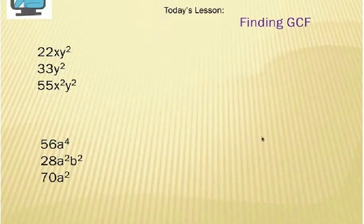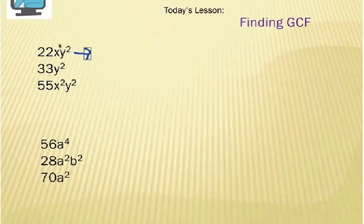All right, as you can see here, we have three algebraic terms: 22xy squared, 33y squared, and 55x squared y squared. Now, the first thing to note is that I need to split up these terms so that I can find a greatest common factor.